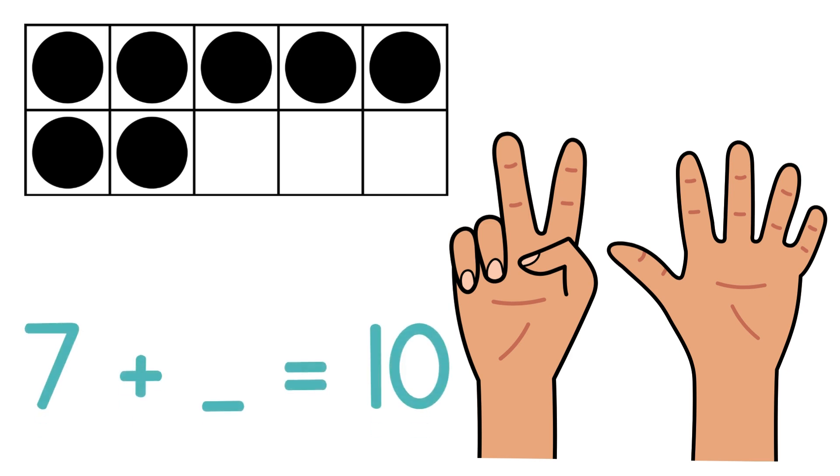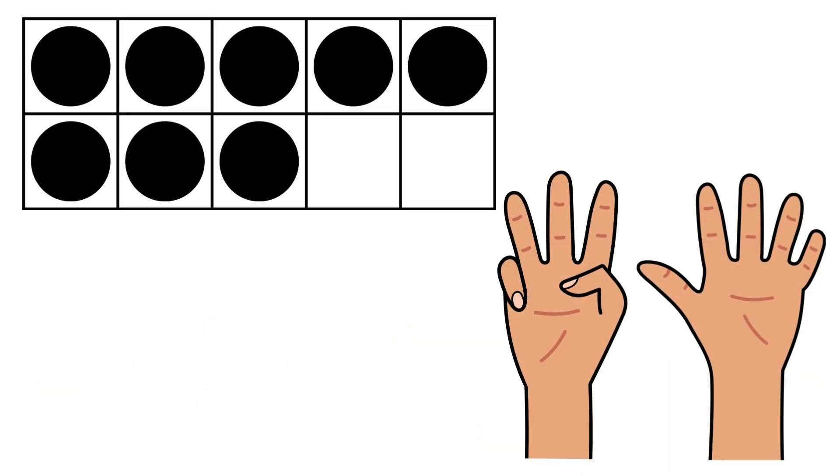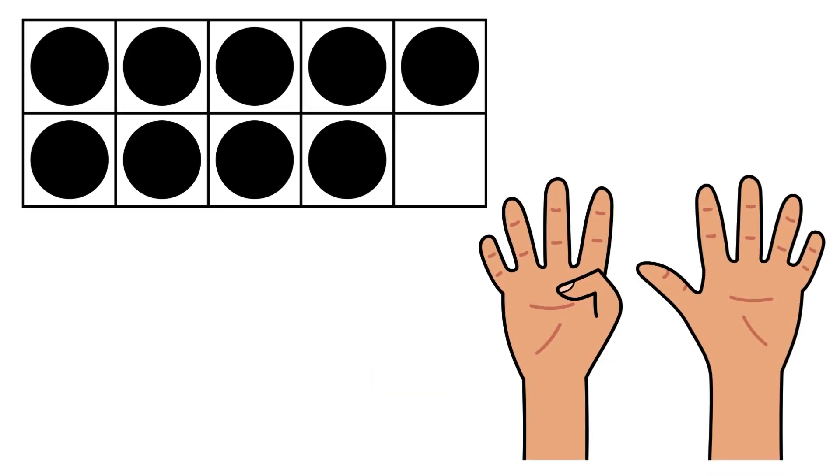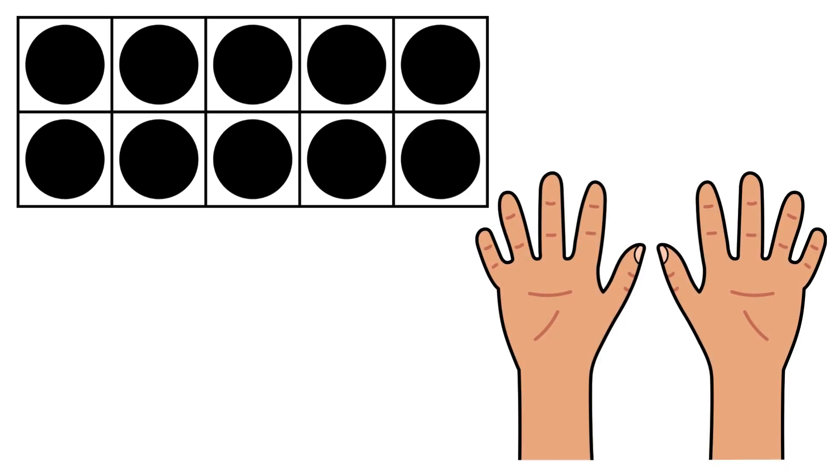And we have eight fingers up and eight circles. How many empty boxes, or how many fingers down? How many more do we need to make 10? 8 and 2 make 10. And now we have nine fingers and nine circles. 9 plus 1 makes 10.